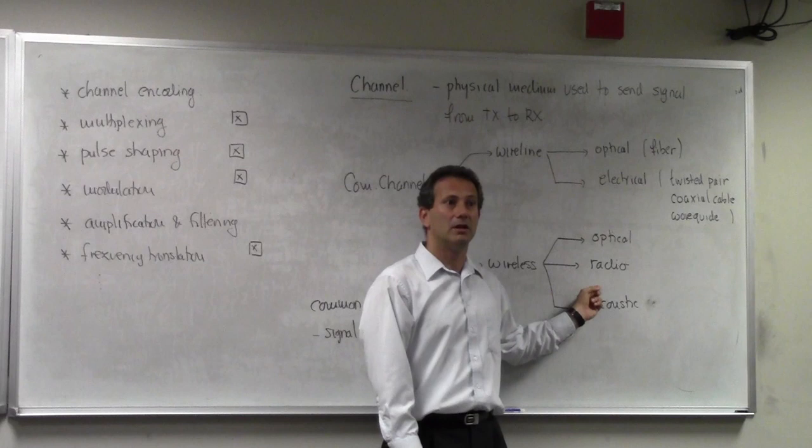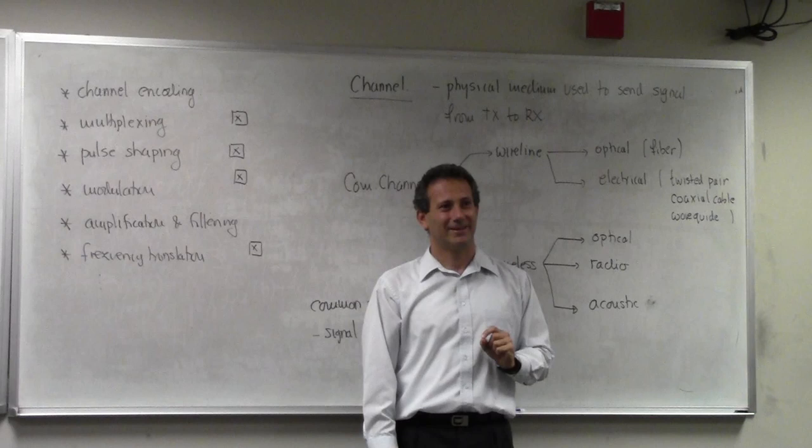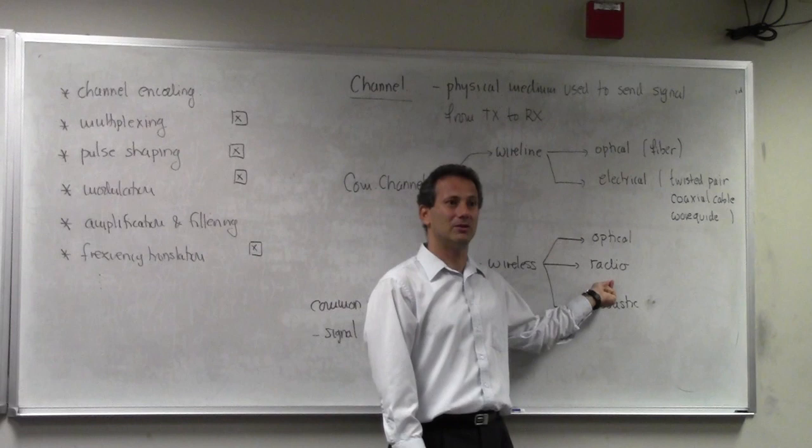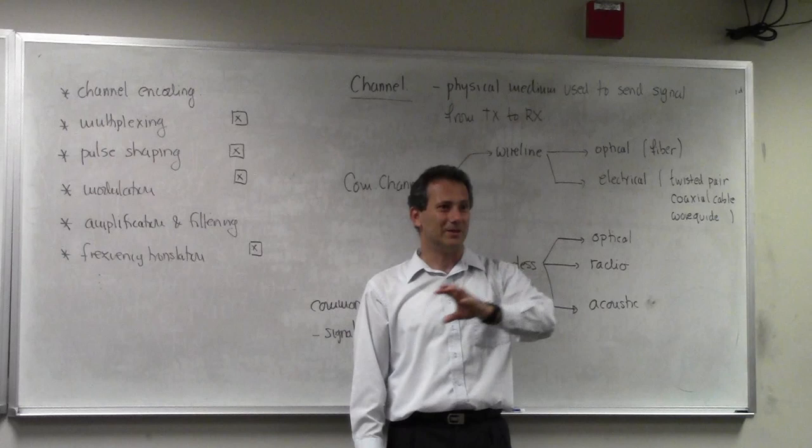When I talk about wireless radio channels, this is going to be a band-pass filter — and it's going to be frequency selective and time varying. That's the channel we need to deal with for radio. But once I go to the level of abstraction, then communication theory and linear system knowledge kicks in: I know the input, I know the impulse response, I know the output.